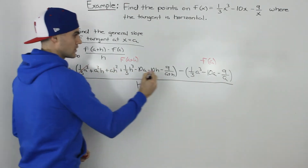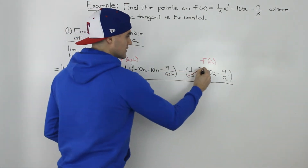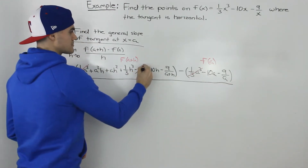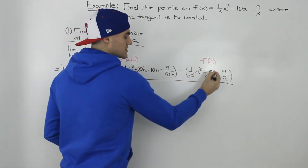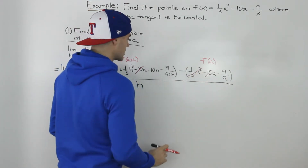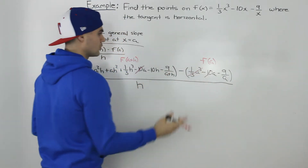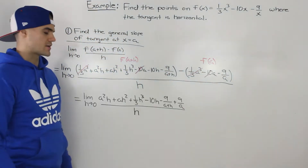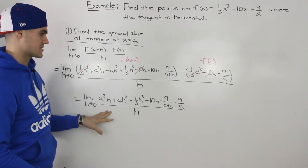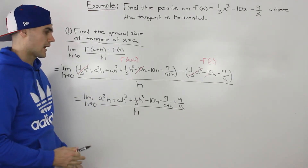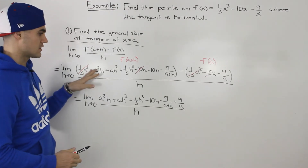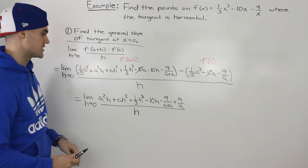Luckily, there will be some terms that cancel out. The (1/3)a³ terms cancel, and the minus 10a and the positive 10a cancel out as well. After simplifying, we're left with a much cleaner expression with a lot fewer terms to deal with.